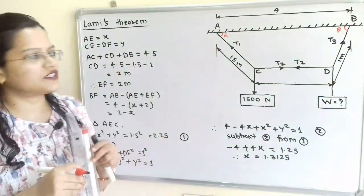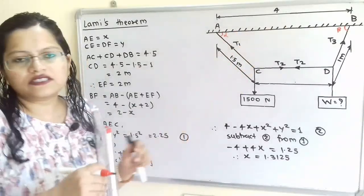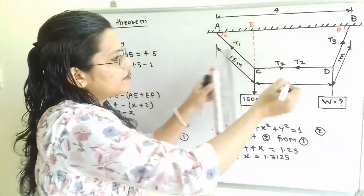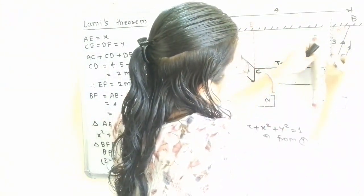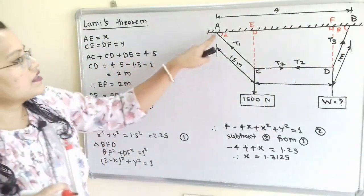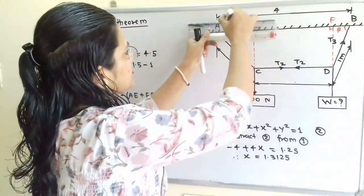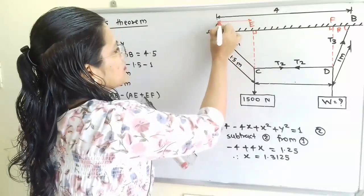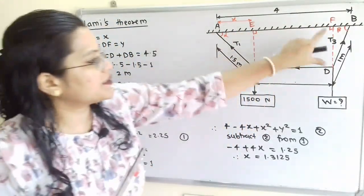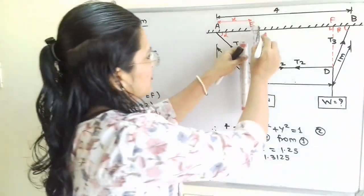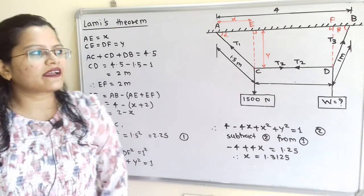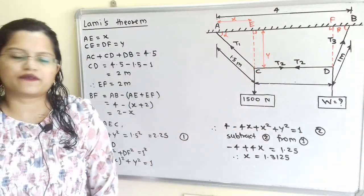We make a construction: from point C, draw a perpendicular to line AB at point E; from point D, draw a perpendicular to AB at point F. We set length AE equal to X and vertical lengths CE and DF both equal to Y, since CD is horizontal, these two vertical depths are the same.